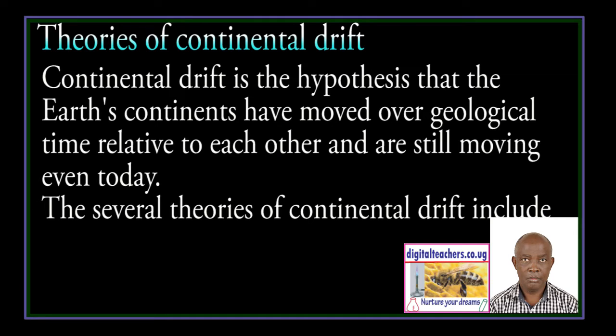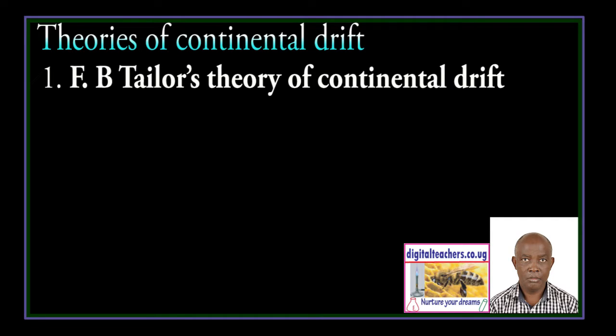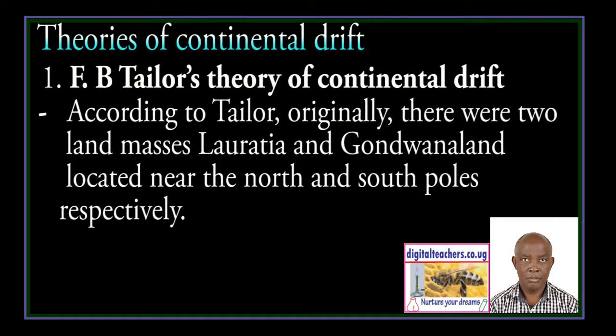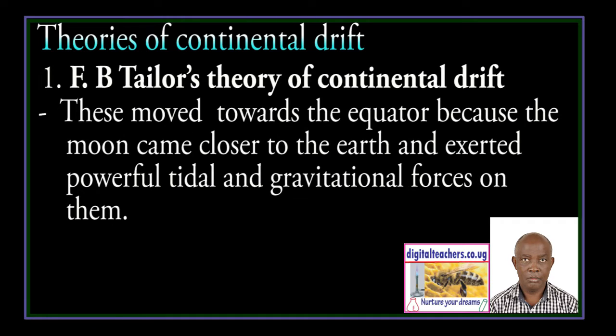The several theories of Continental Drift include: one, FB Taylor's theory of Continental Drift. According to Taylor, originally there were two land masses, Laurasia and Gondwanaland, located near the North and South Pole respectively. These masses moved towards the equator because the moon came closer to the earth and exerted powerful tidal and gravitational forces on them.